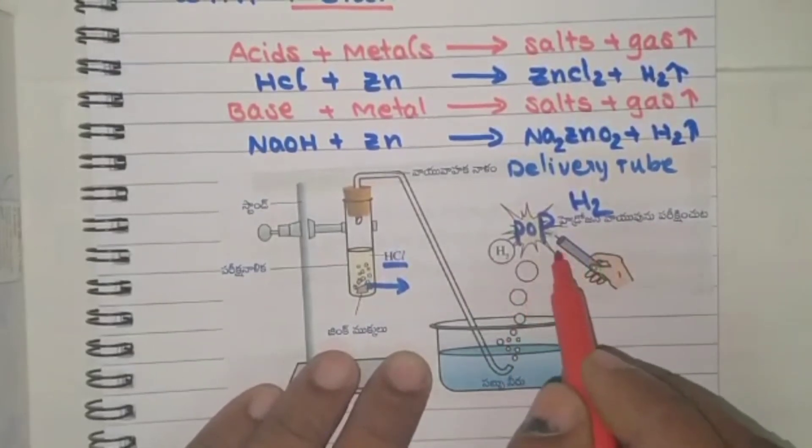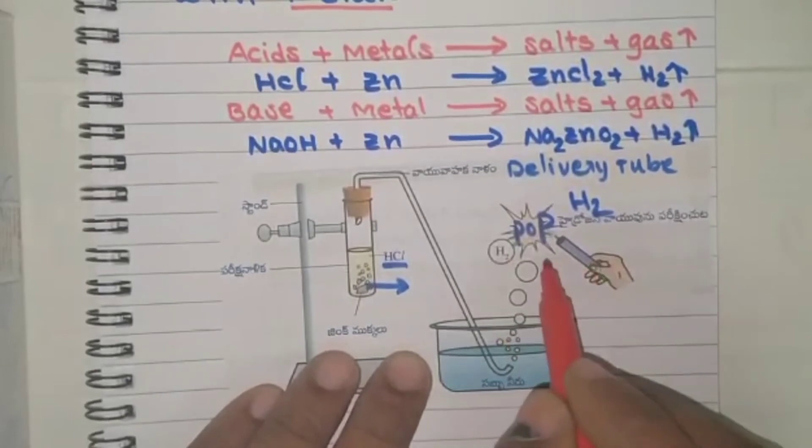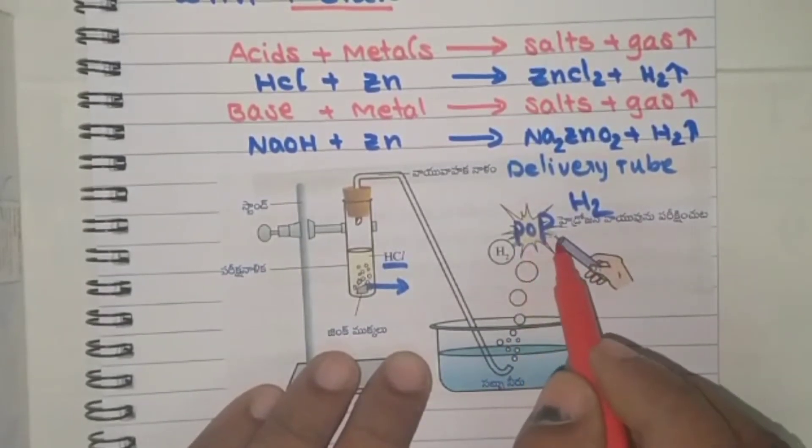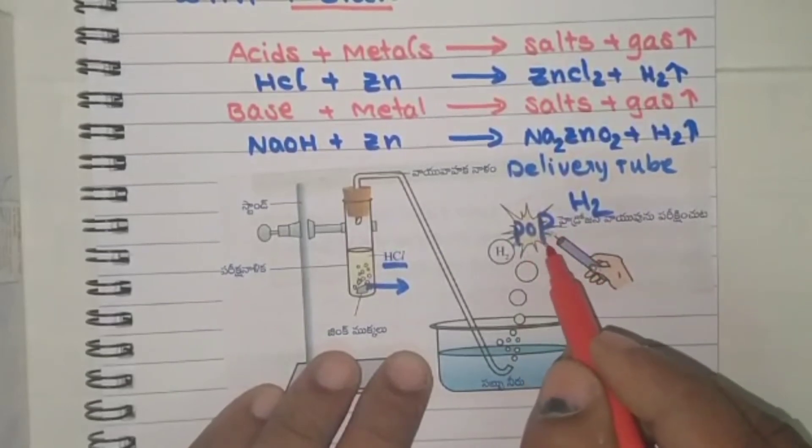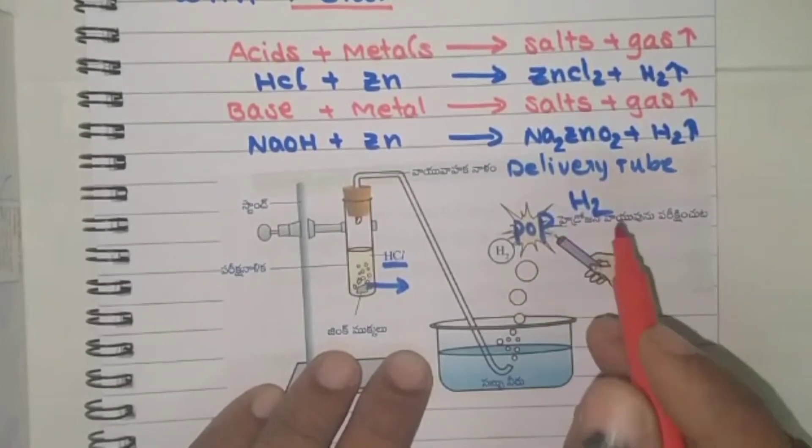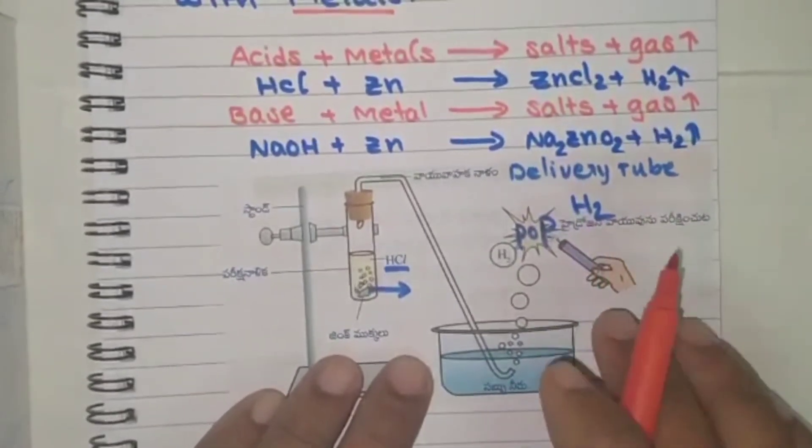That is a confirmation that the evolved gas is hydrogen gas. Actually, hydrogen gas does not support flames, it is a non-combustible gas. It does not support flames, so it will be torn off immediately, the flame, and it will give some sound. That is the confirmation that the evolved gas is hydrogen gas.